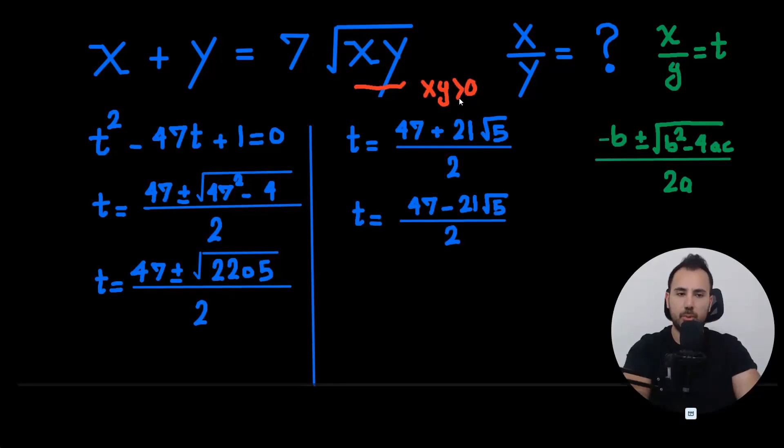Of course, if they are real numbers. If that's the case, x over y should also be positive. Because here, x and y should have the same signs, maybe both positive, both negatives. And x over y will then be positive.